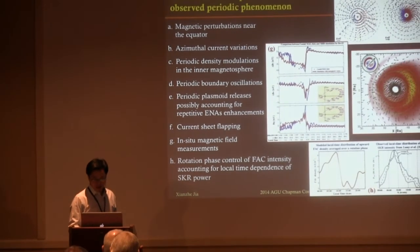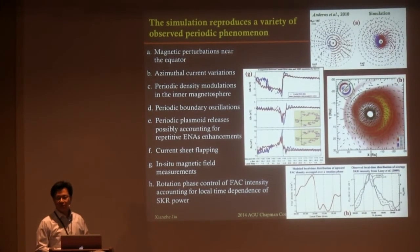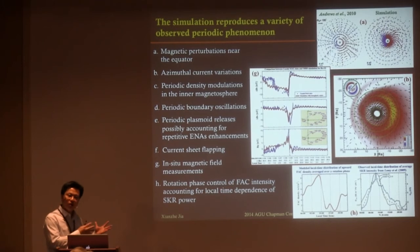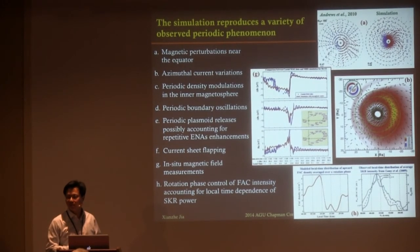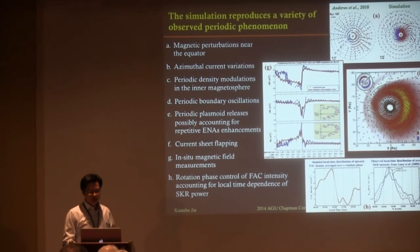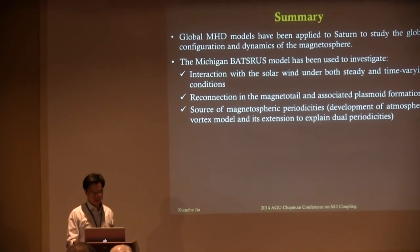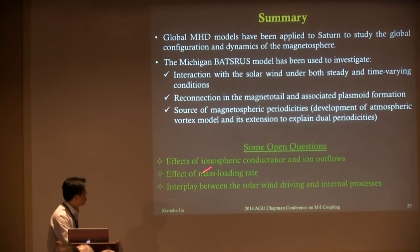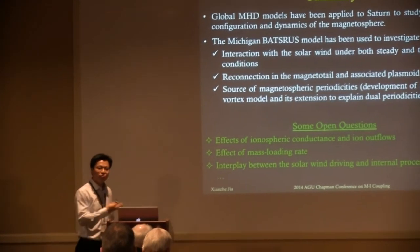There are many things I don't have time to cover, but we are starting to dig deep into the simulation to understand the linkages. The responses are very consistent qualitatively and quantitatively with the observations. Some open questions remain: we need to consider effects of non-uniform precipitation-associated conductance — I believe Ingo will talk about that in the next talk — and outflows from the ionosphere. The mass loading rate is still very uncertain and poorly constrained observationally, and we need to consider the interplay between the solar wind and internally driven processes.